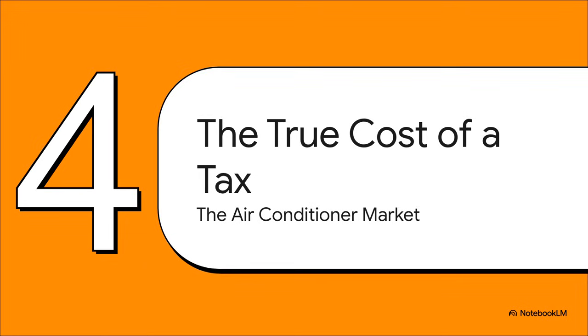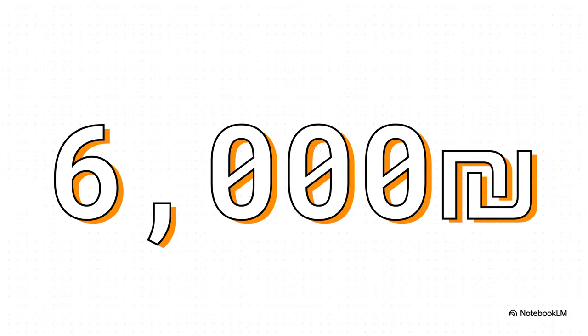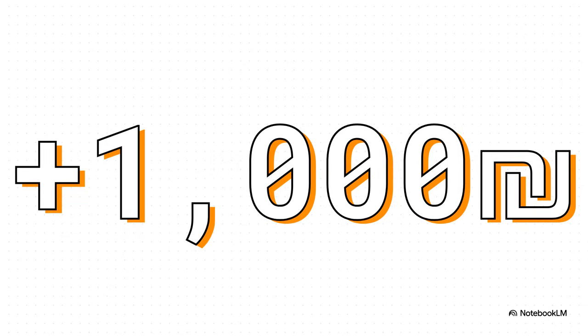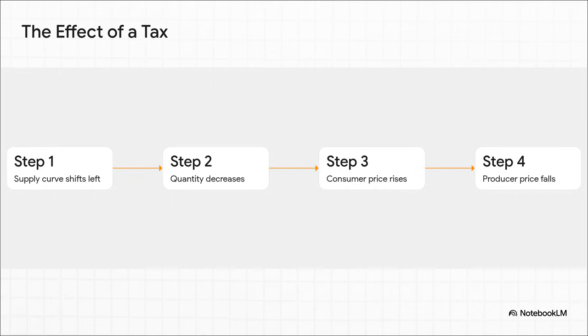Let's use the air conditioner market as a case study to see exactly how a new tax can ripple through the whole system. Before any government intervention, the market is in equilibrium. Buyers and sellers have naturally agreed on a price of 6,000 shekels for an air conditioner — that's our baseline. Now the government steps in and slaps a 1,000 shekel tax on every single air conditioner sold. This one move instantly changes the entire cost structure for the producers and sets off a really powerful chain reaction. That supply curve shifts to the left because of the new cost, and this new supply curve now crosses our original demand curve at a totally new, higher price.